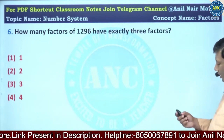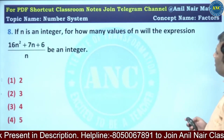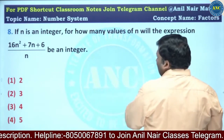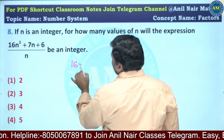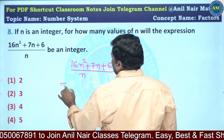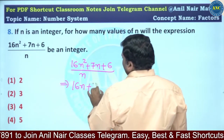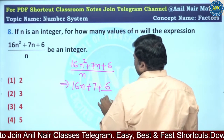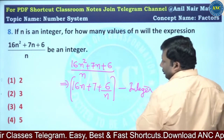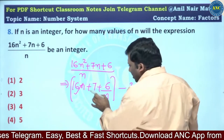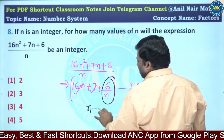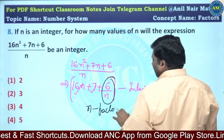These are new model questions. Consider (16n² + 7n + 6) divided by n. This becomes 16n + 7 + 6/n. Since 16n and 7 are already integers, for the whole expression to be an integer, 6/n must also be an integer. That means n must divide 6, so n should be a factor of 6.